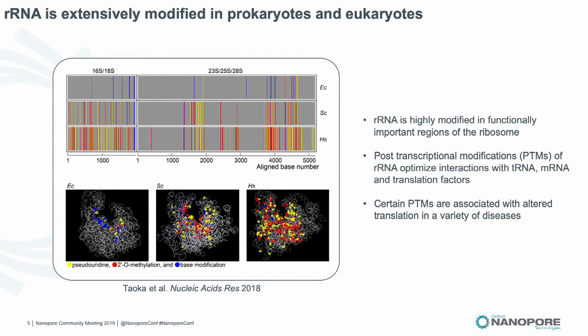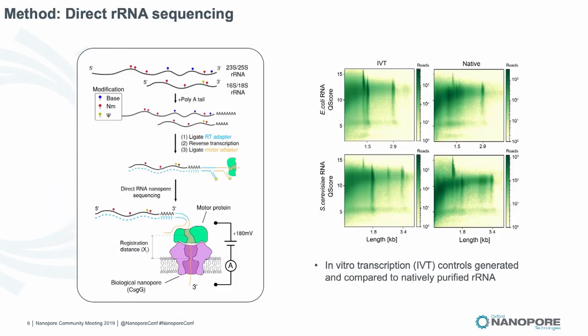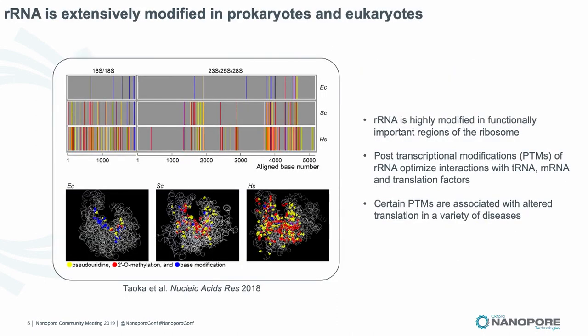These post-transcriptional modifications on ribosomal RNA optimize the interactions with tRNA, mRNA, and various translation factors. A variety of these modifications can also be associated with altered translation, particularly in cancer and other diseases like Treacher Collins. The reason why we want to look at ribosomal RNA is precisely because of these modifications — the locations are precisely known and they're well-validated with orthogonal methods like mass spec.